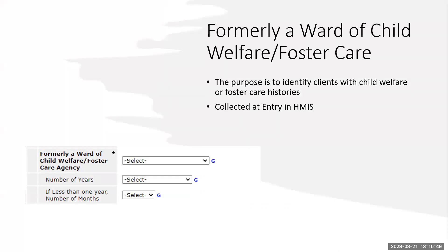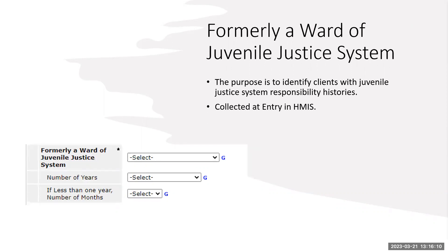Formally a ward of child welfare and foster care: this is really to identify clients who are engaged or have been engaged within these systems. It's collected upon client entry. The data elements within this are the number of years — and if it's less than one year, the number of months. The same applies for formally a ward of the juvenile justice system: the purpose is to identify any youth that's been involved and engaged with the juvenile justice system, and then if so, the number of years and/or the number of months.